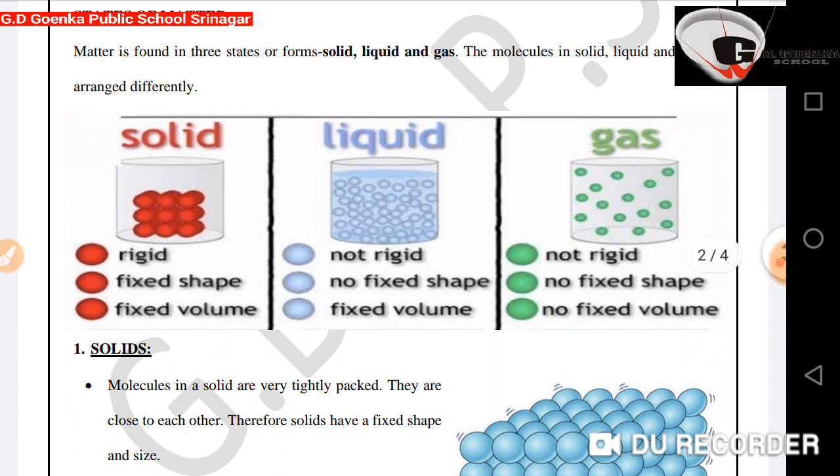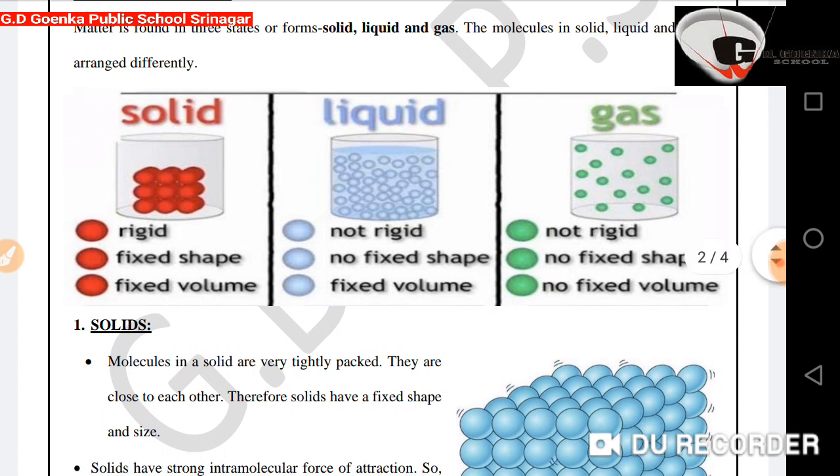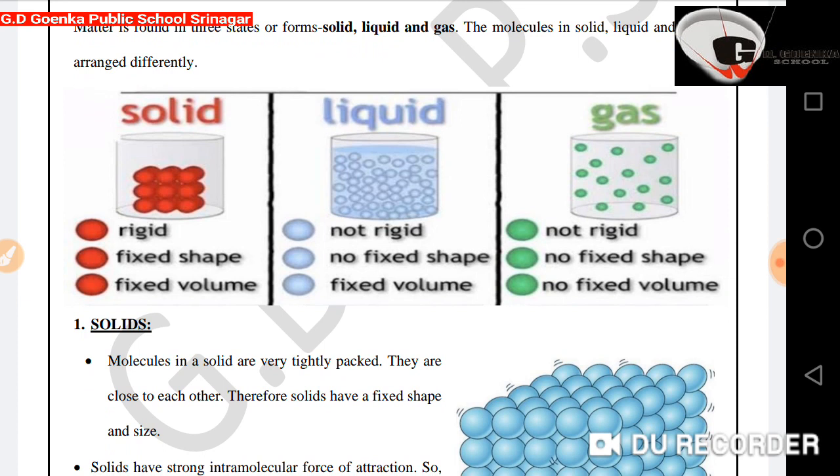States of Matter. Matter is found in three states or forms: solid, liquid, and gas. The molecules in solid, liquid, and gas are arranged differently.